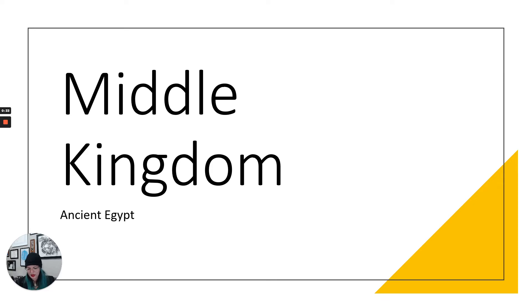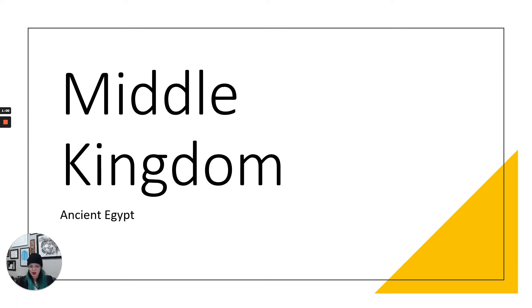So what does the Middle Kingdom mean? It's also called the period of reunification. Between 2050 BC and 1710 BC is the period we call the Middle Kingdom — a fairly substantial amount of time. In this time, the unity of the country of Egypt is more united and strengthened under Mentuhotep II of the 11th dynasty. It splits into upper and lower again between the Old and Middle Kingdoms, and then it's reunified. After the reunification, the kings were able to turn their focus back to arts and culture.